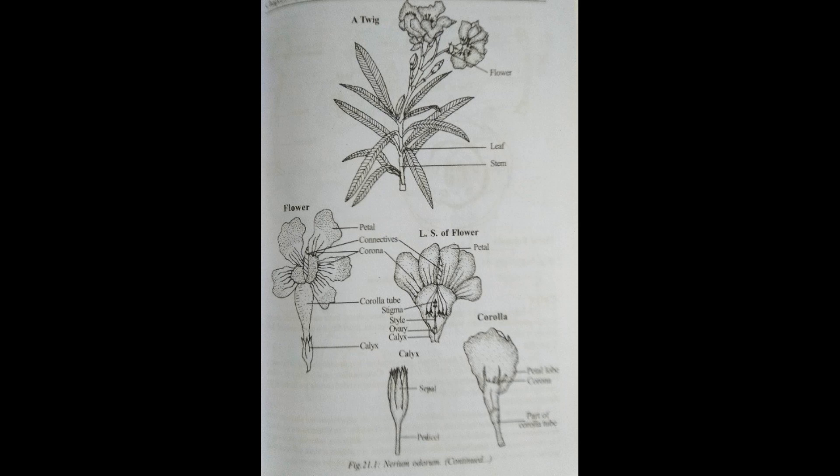Inflorescence is terminal or axillary, cymose type. The flower characters are: flowers are bracteate, pedicellate, regular, bisexual, and hypogynous.